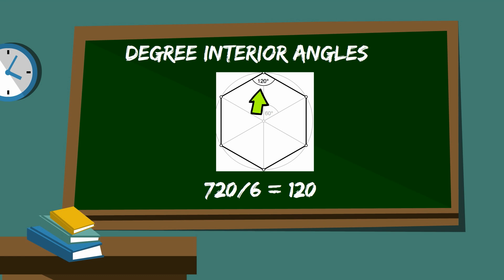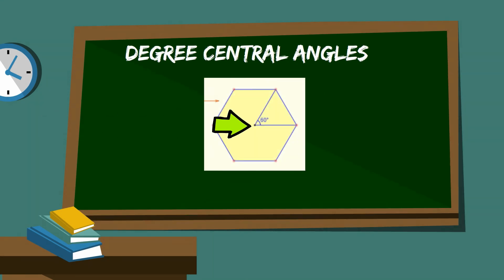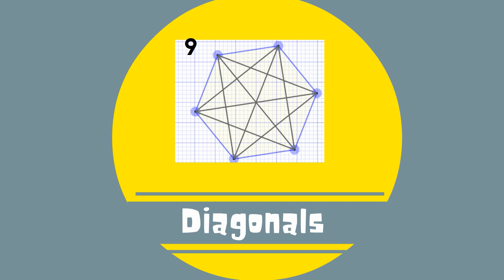And the measure of the central angle equals 360 divided by the number of sides, which is 6, which is 60. A hexagon has 9 diagonals.